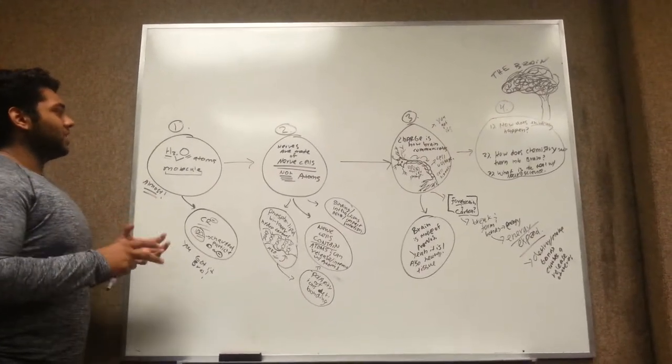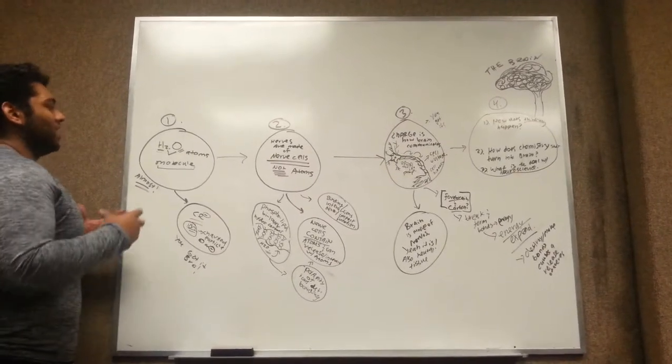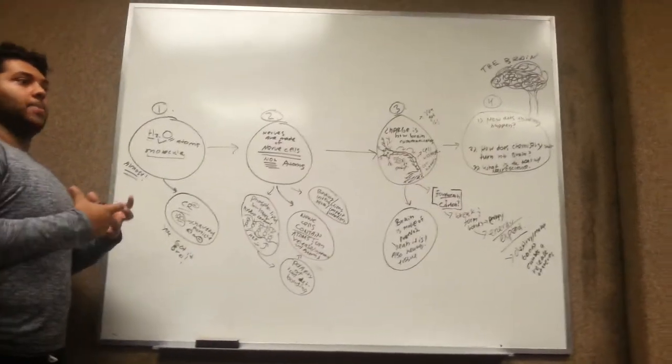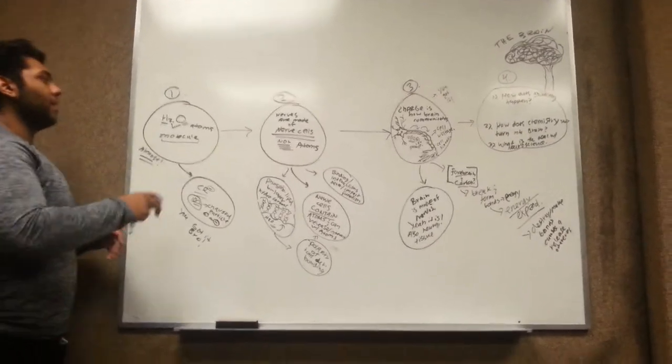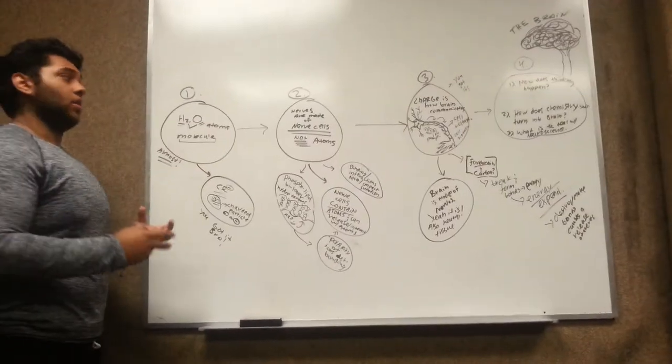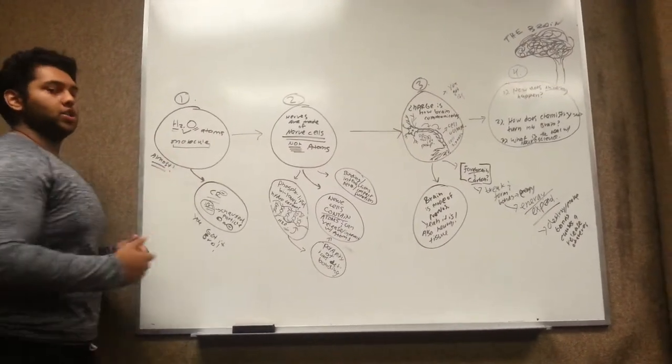So you basically said that water is some type of atom type of thing. And you're on the right track, you're thinking of the building blocks of chemistry which is the basis for all of this, but really water is a molecule that is made up of atoms. You have two hydrogen atoms and you have one oxygen atom.